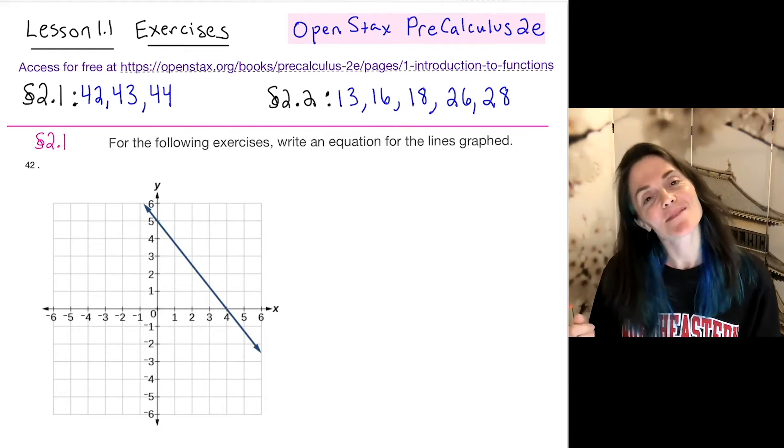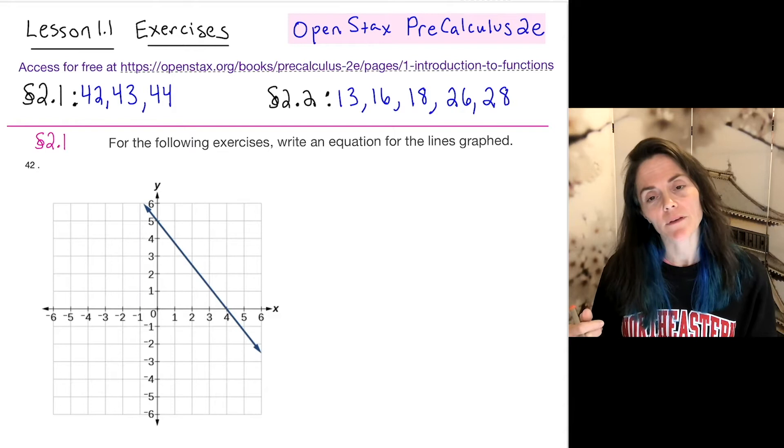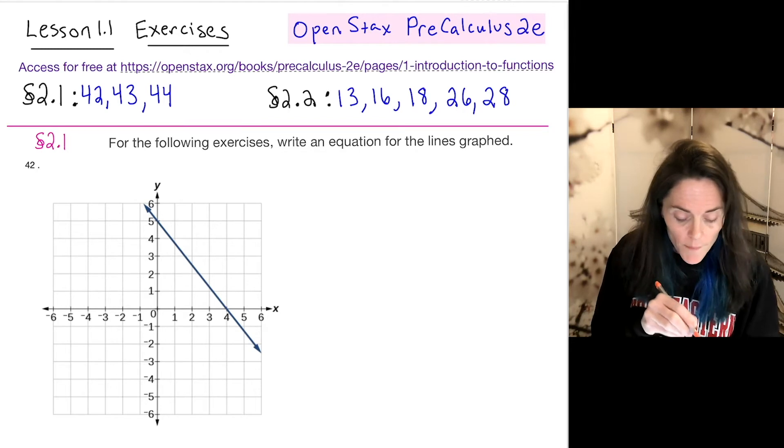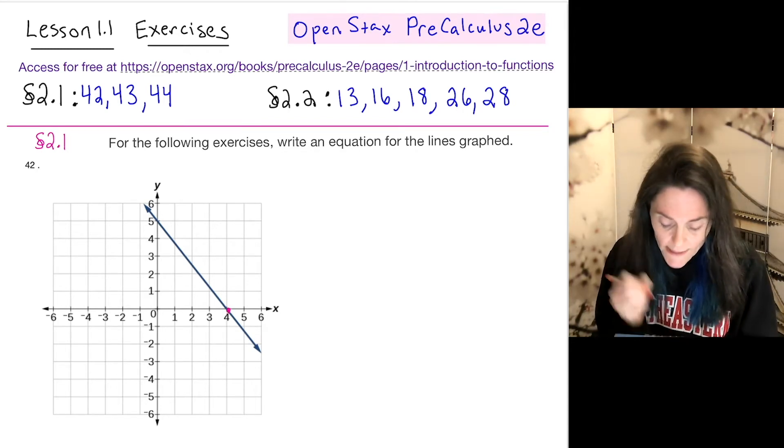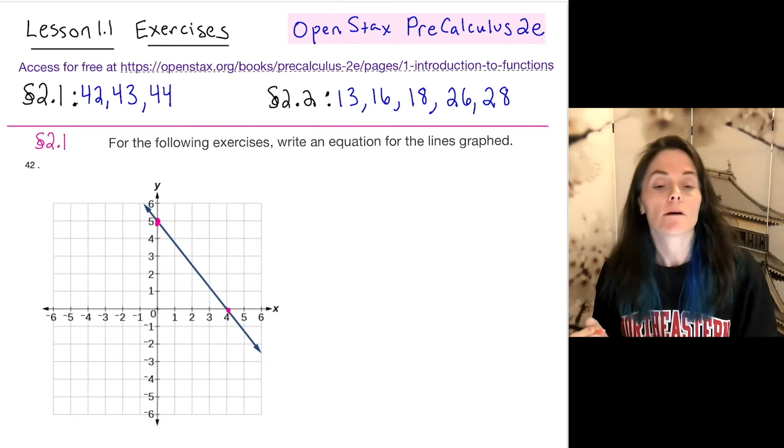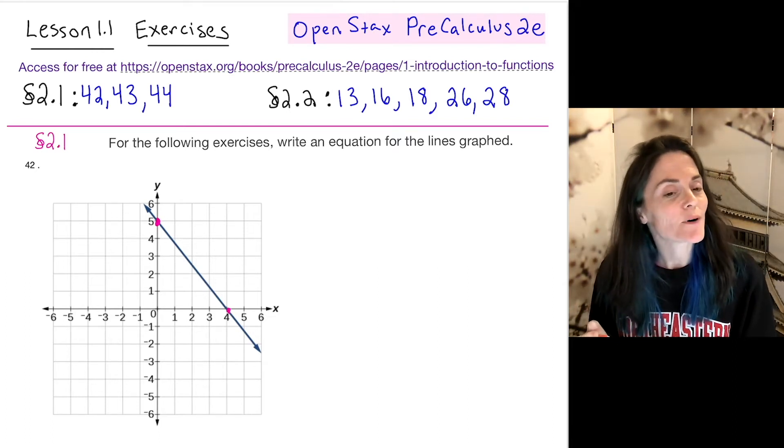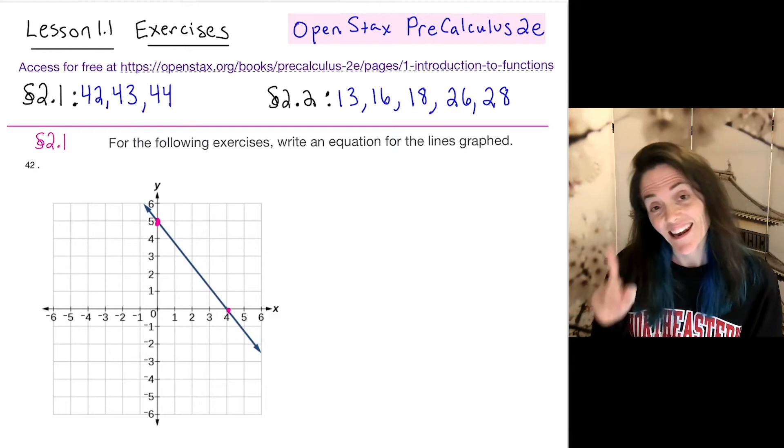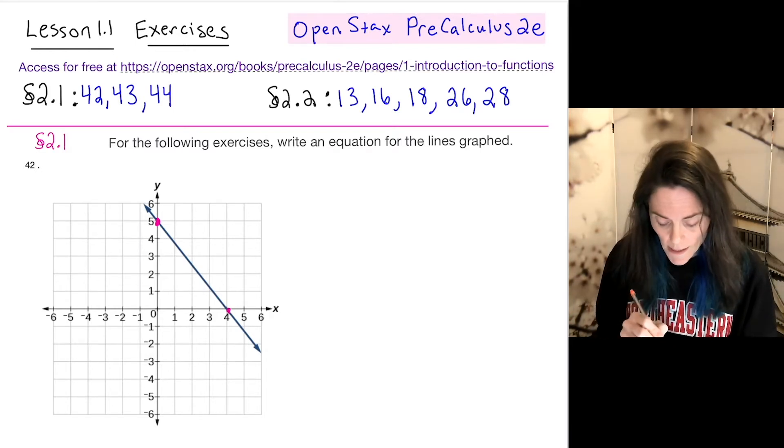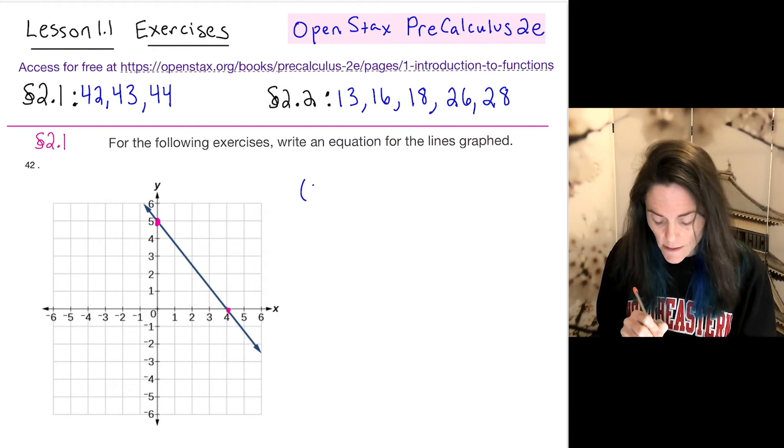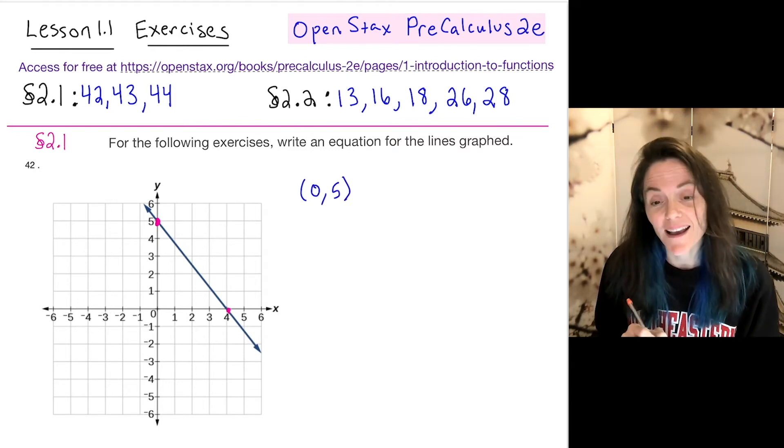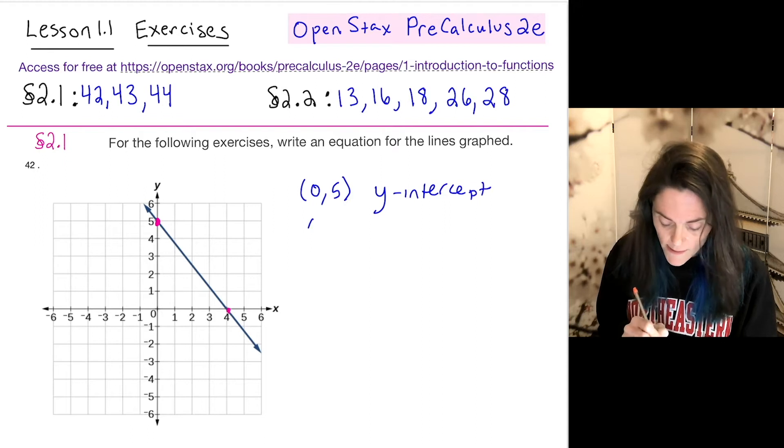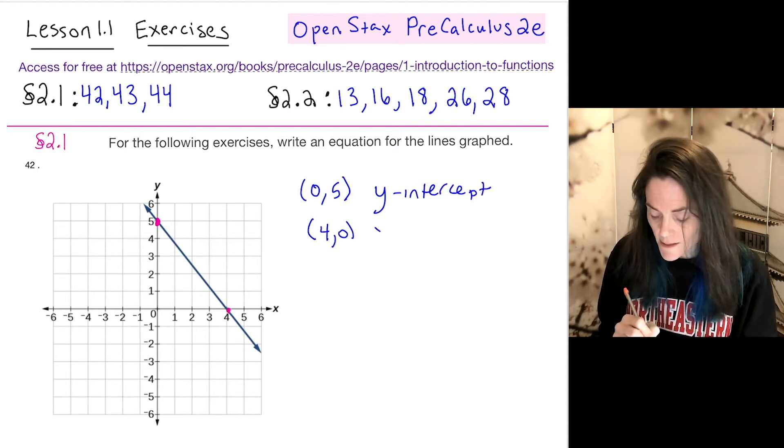In 2.1, numbers 42, 43, and 44, we are given a graph of a line. We're asked to write the equation for the line. Now, we're actually given both the x-intercept and the y-intercept of this one. So maybe for this first example, 42, I won't count boxes because I don't need to. I'll do that in the next two problems. So note that we are given the y-intercept, which is 0, 5, or b equals 5. This is the y-intercept. And then we are also given 4, 0. This is the x-intercept.